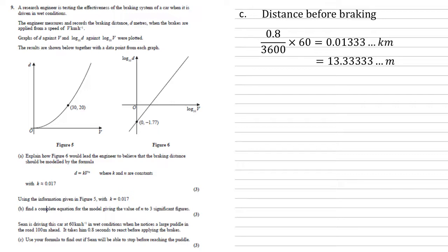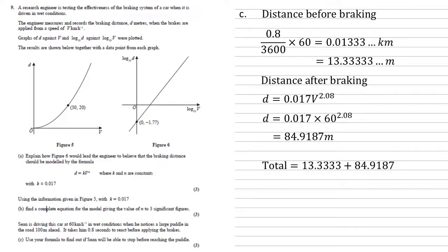We also need to work out the distance after braking. We've got our formula from before d equals 0.017 v to the power of 2.08. We know that the velocity is 60, so substituting that in and putting into the calculator we get 84.9187 meters. Adding that together with our previous answer means it takes him a total of 98.25 meters to stop.